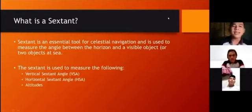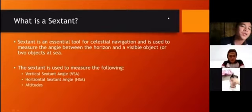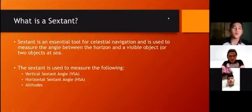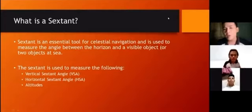A sextant is an essential tool for celestial navigation and is used to measure the angle between the horizon and a visible object or specifically a celestial object. The sextant is used to measure the vertical sextant angle or VSA, the horizontal sextant angle HSA, and the altitudes. These angles will be tackled further by our next supporter.